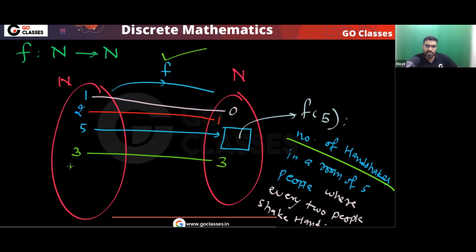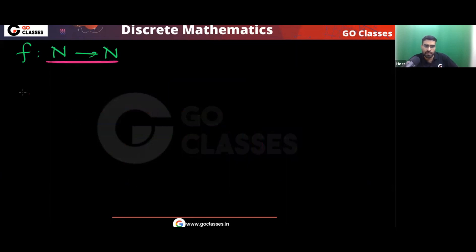If you have four people, think about it — how many handshakes will be there? There will be a total of six handshakes. So let's see what is happening here. We have a table: number of people 1, 2, 3, 4, 5, n, n+1, and so on.